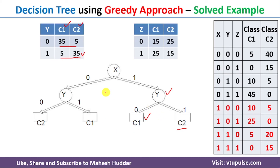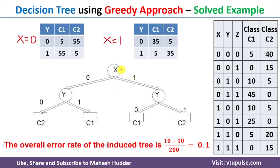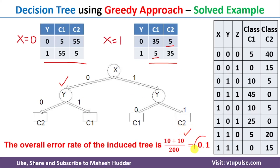Once we build this decision tree, we need to calculate the overall error rate. When calculating the overall error rate for X, there are two branches: X equal to 0 and X equal to 1. For X equal to 0, we use the Y table — 120 examples — and for X equal to 1, the Y table has 80 examples, giving a total of 200 examples. The errors are: 5 plus 5 from the left side, and 5 plus 5 from the right side. So 20 divided by 200 equals 0.1.